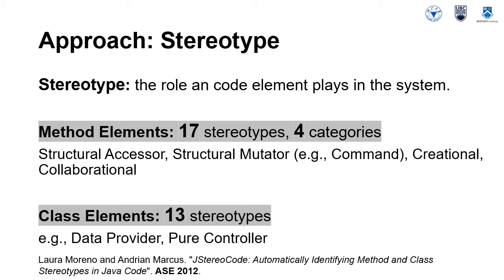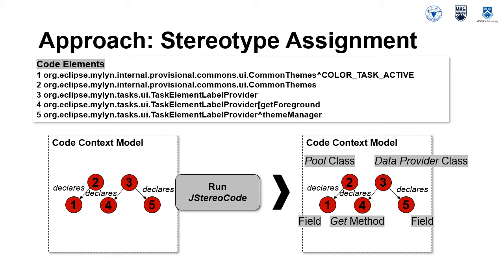Class stereotype roles include data provider, which encapsulates data and consists mainly of accessor methods, and pure controller that consists entirely of controller and factory methods. We use the J-stereocode tool to assign stereotypes to each code element on the fly as needed during the prediction process. Specifically, we run the tool on snapshots of code repositories associated with the context models. During prediction, we search for each code element in the output of J-stereocode for the related snapshot to assign a stereotype.